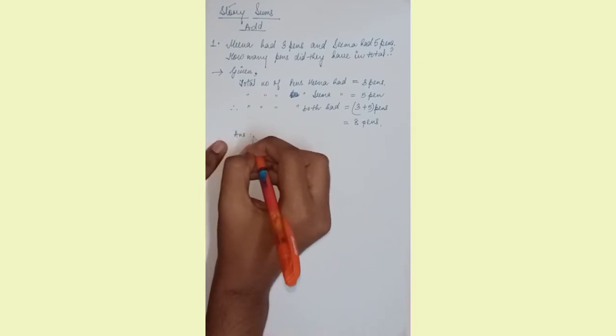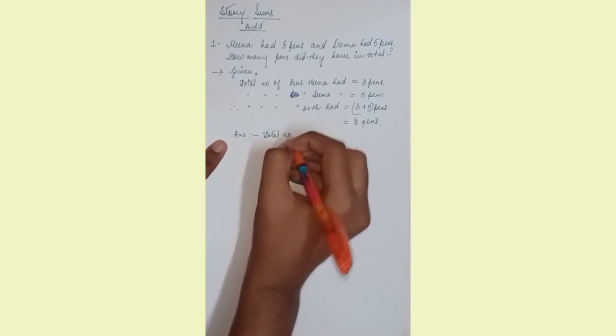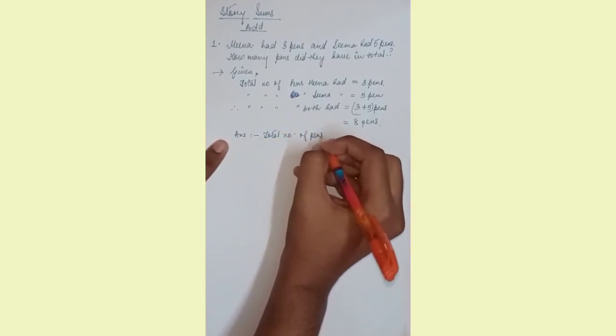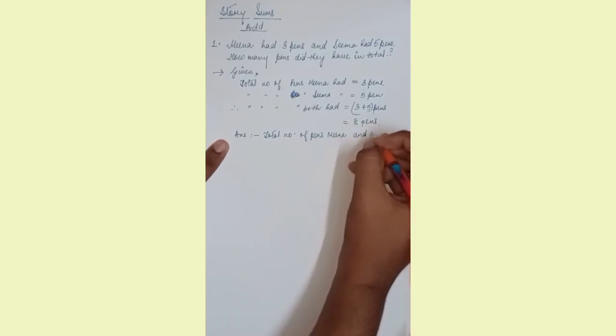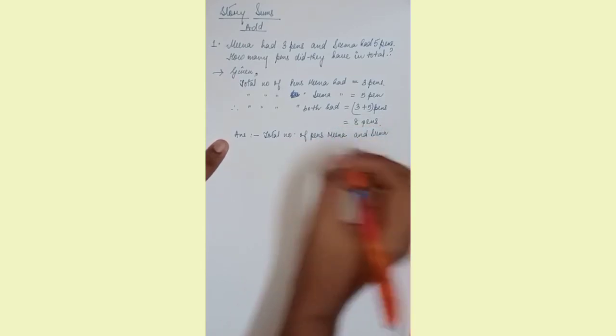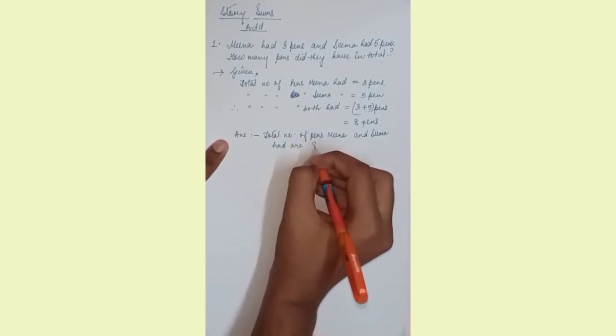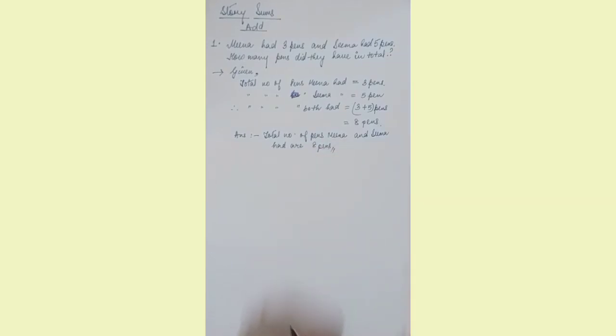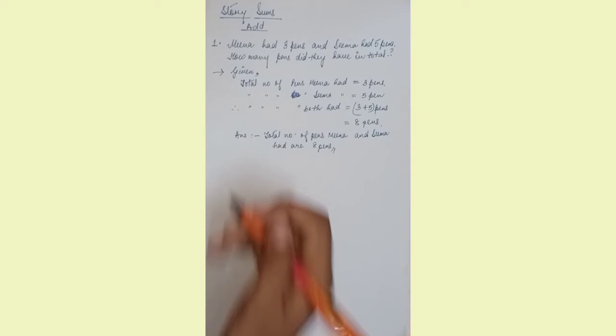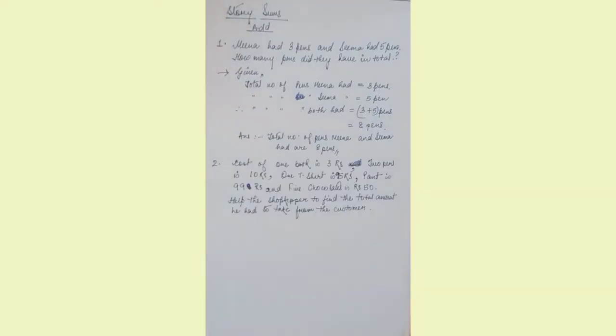At last you can write the full number of pens. You have to write the answer: total number of pens Meena and Sima had is eight pens. So this is one sum, let us move to the second sum.